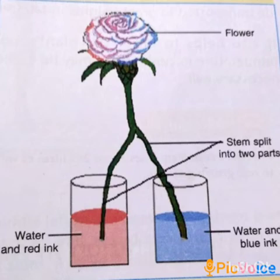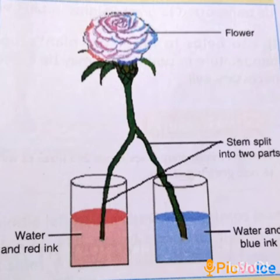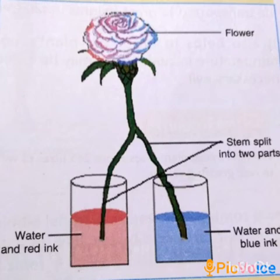We will fill the beakers with water, then add a few drops of red ink in one beaker and a few drops of blue ink in the other. Take a flower with a stem at least 15 cm long. Using a sharp blade, carefully cut the stem into two halves partway up towards the flower. Dip one half of the cut stem in one beaker and the other half in the second beaker. Keep the setup undisturbed for two to three hours. We will then observe that half the flower has turned red while the other half has turned blue. This shows that the colored water moved upward through the stem to the petals. The red and blue lines in the stem indicate the path for movement of water — the xylem tubes.